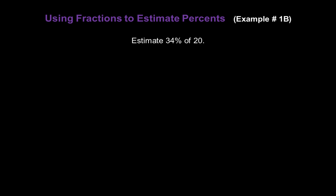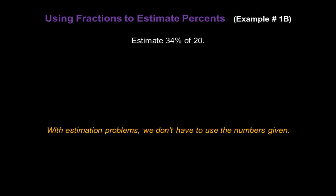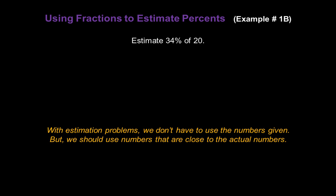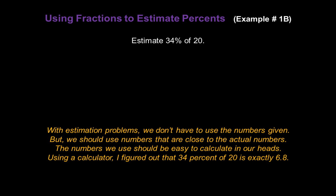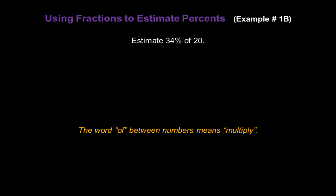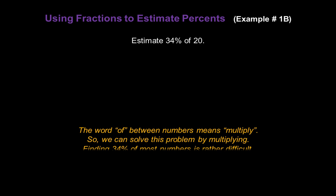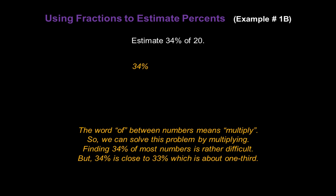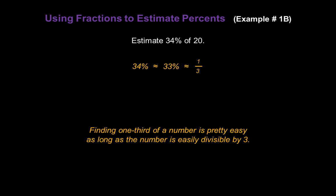Now let's estimate 34% of 20. With estimation problems, we don't have to use the numbers given, but we should use numbers that are close to the actual numbers that are easy to calculate in our heads. Using a calculator, 34% of 20 is exactly 6.8, so our estimate should be close to 6.8. The word 'of' means multiply. Finding 34% of most numbers is rather difficult, but 34% is close to 33%, which we know is about one third. Finding one third of a number can be pretty easy, as long as the number is easily divisible by 3.